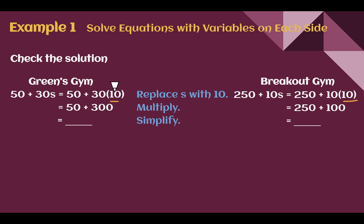So 50 plus 30 times 10. 30 times 10 is 300 plus 50. Green's gym would cost $350 for 10 sessions.